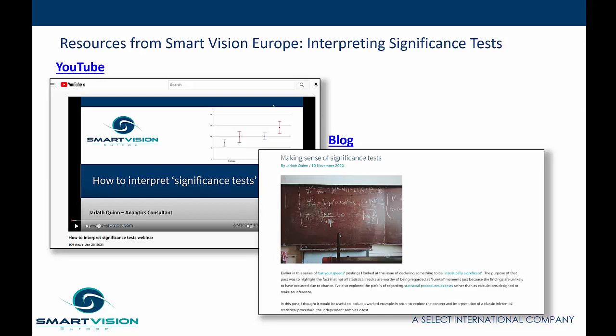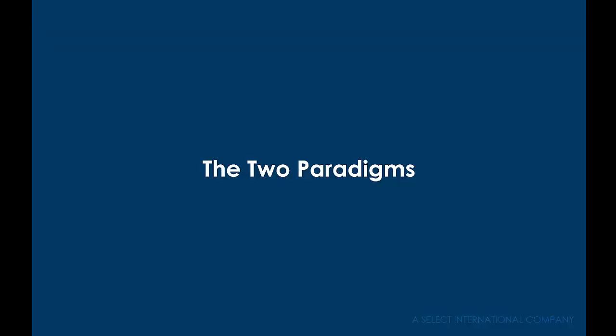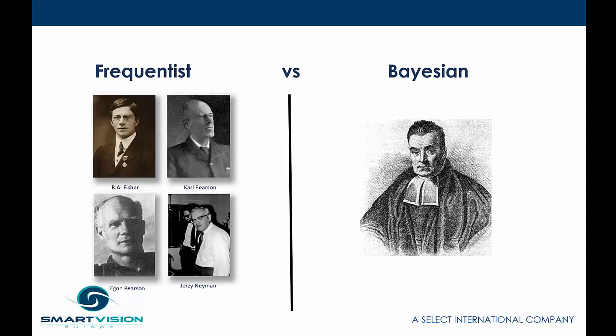These days much of modern statistical analysis is split between two very different approaches. Until relatively recently, most students of statistics and certainly the overwhelming majority of statistical analysis programs like SPSS, Stata, or SAS have followed what is often referred to as the frequentist tradition. This is the world of the null hypothesis test, p-values, alpha levels, confidence intervals, and statistical significance, pioneered by a relatively small group of statisticians in the 20th century, many of whom didn't entirely agree with one another.